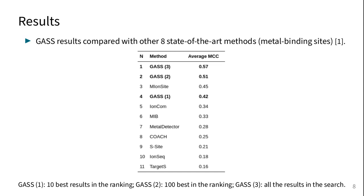Regarding metal binding sites, GAS was compared with another eight methods. Once GAS has a final population of solutions, we define three different thresholds: one, the 10 best results in the ranking; two, the 100 best in the ranking; and three, all the results obtained in the search.